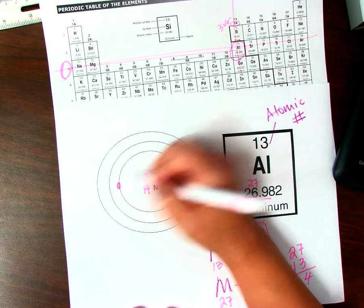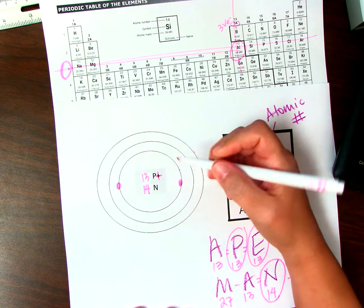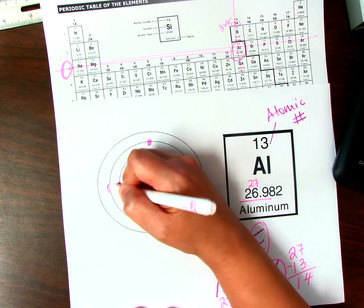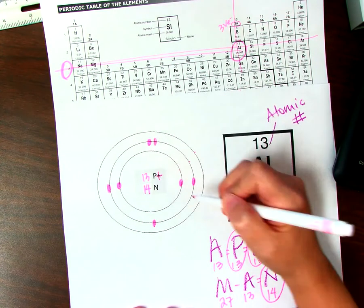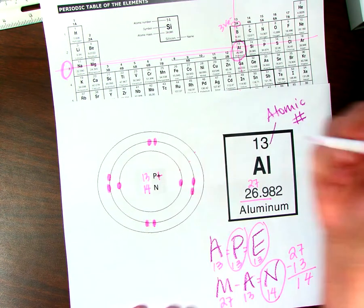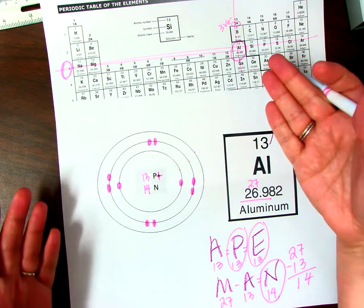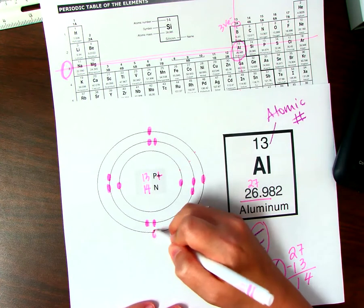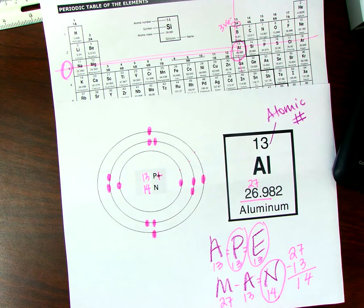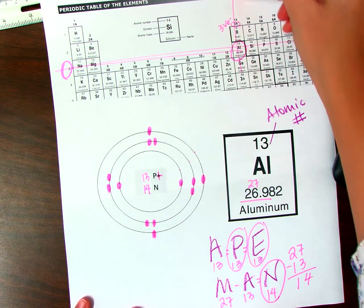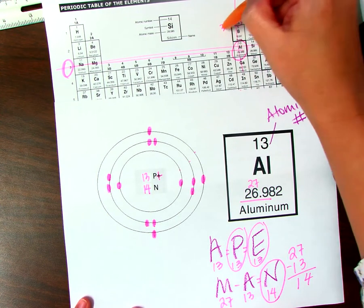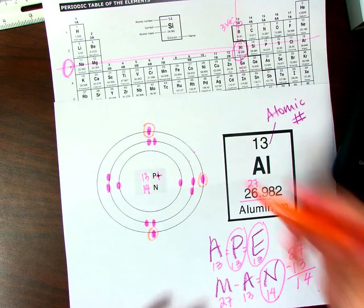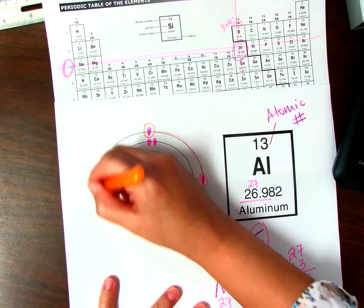13 electrons. Let's start here. 1, 2, that's all that can fit in the first level. We go to the second level. 3, 4, 5, 6, 7, 8, 9, 10. That's all that can fit there is 8, so now we have to go to the third level. 11, 12, 13. 13 electrons. It's in group 13, so we should have three valence electrons. One, two, three valence electrons. Valence electrons are on the outer level, this outer level.